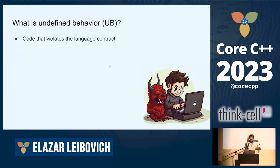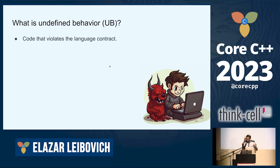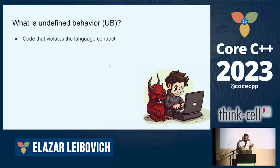So what is undefined behavior? The technical aspect is a breach of contract. The standard maintains no requirement on a program with undefined behavior. One strike and you're out. Not only the function that contains the undefined behavior can do whatever it wishes — all your program is undefined once undefined behavior is reached. It has no obligations.